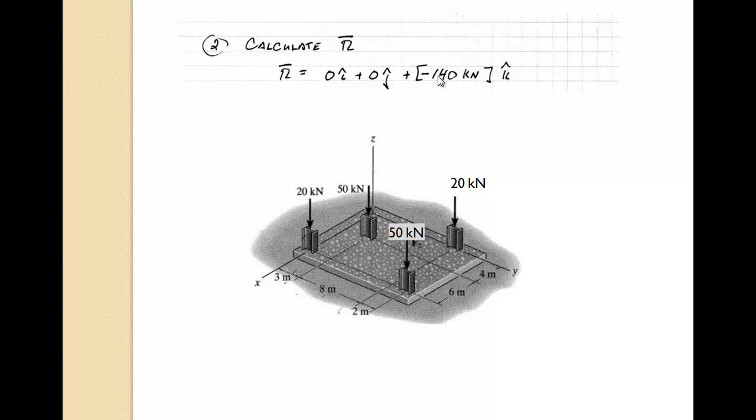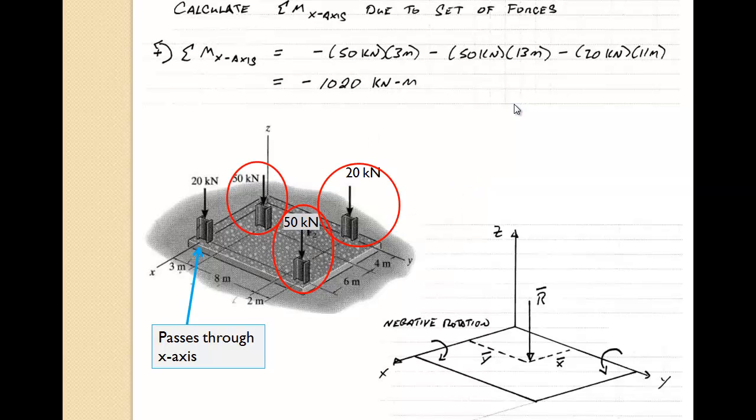It's in the negative z direction, so we get zero i plus zero j plus negative 140 kilonewtons.